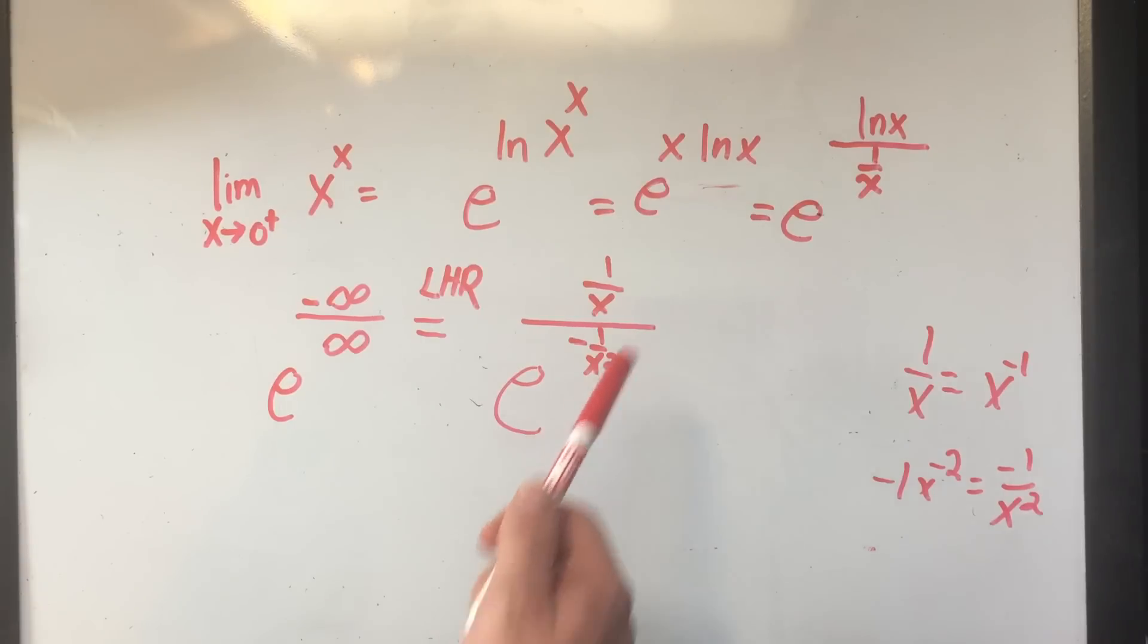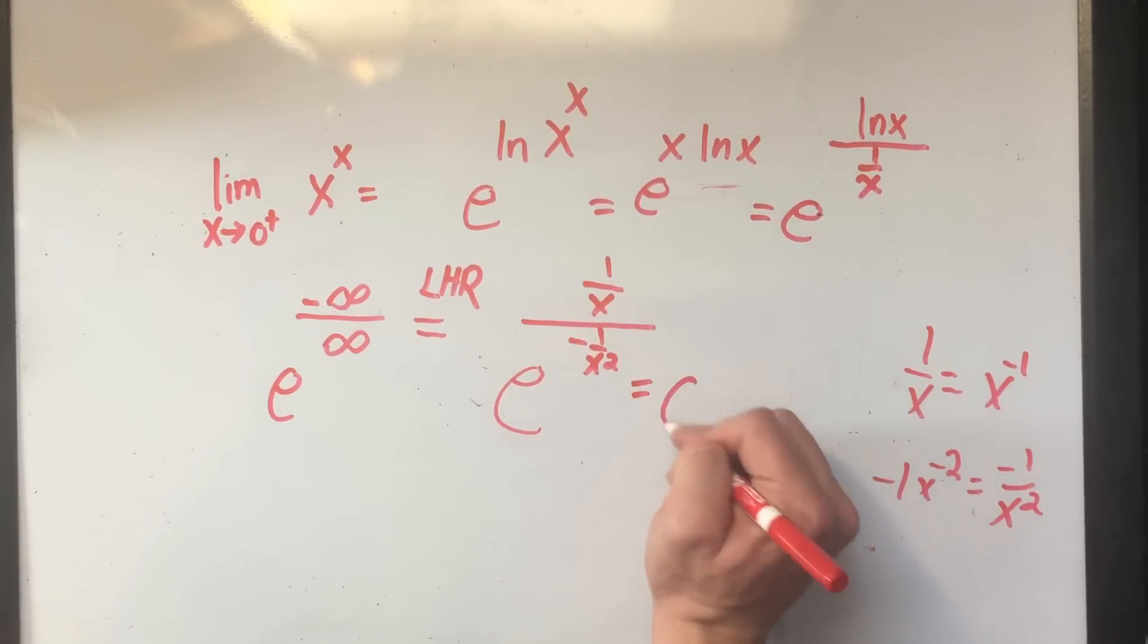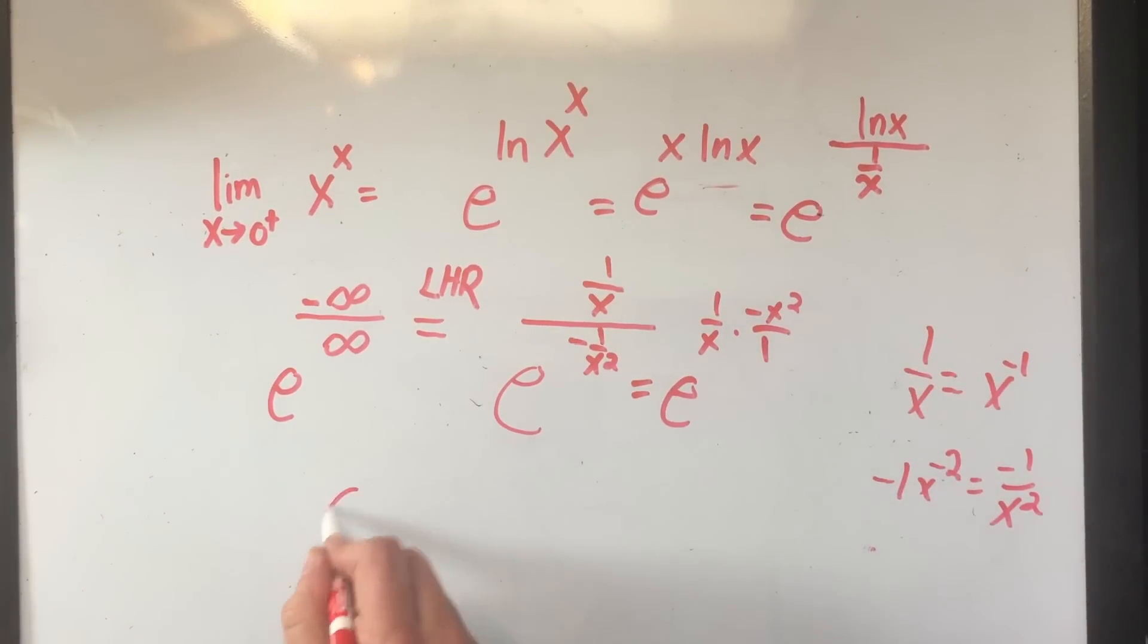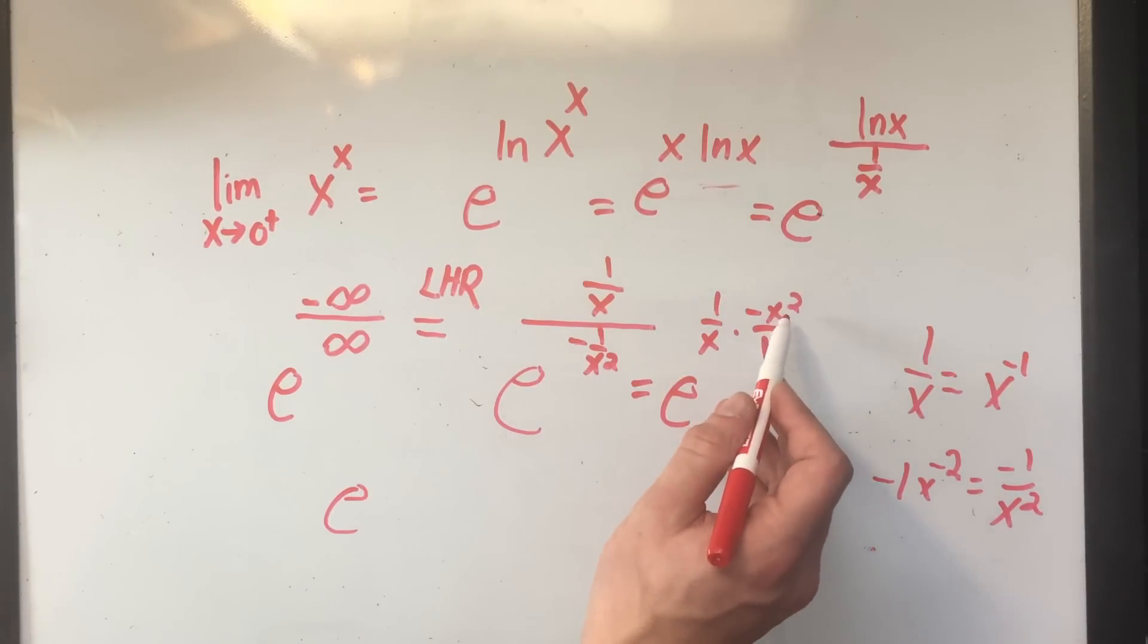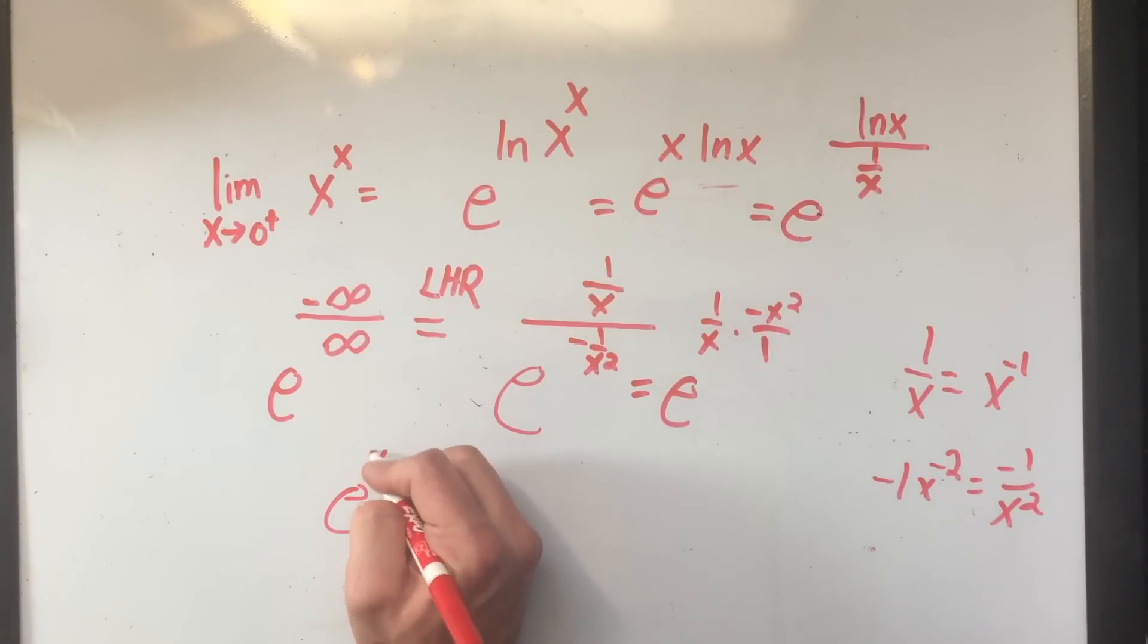So now I've got e to this mess. Remember if I have a fraction over a fraction, I can multiply by the reciprocal. And now it looks like, okay, I've got x squared over x. That's just going to leave me with an x on top. 1 over 1. You can think about canceling that, but I'm just not even going to bother writing it. And I think that's going to get a minus sign. So e to the negative x.